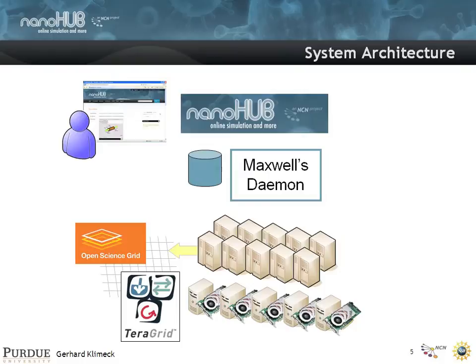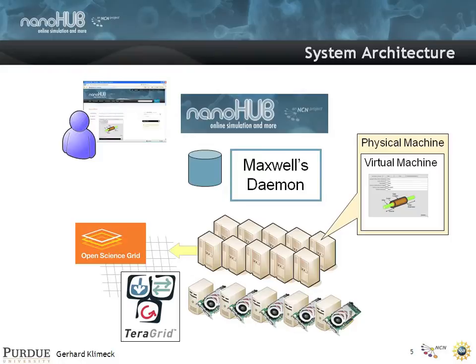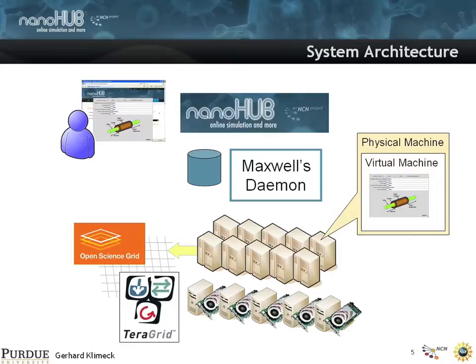To give you an idea of how this system works: from the outside, nanohub.org looks just like a normal website with a content management system. But if you go into a tool page and say 'I want to launch a tool,' what happens is a virtual machine on top of a physical machine gets allocated. In that virtual machine we run a full-fledged Unix application with a real user interface, and we pipe that interface to the user's browser. It's kind of like a remote desktop or VNC — or consider it magic if those terms don't mean anything to you.